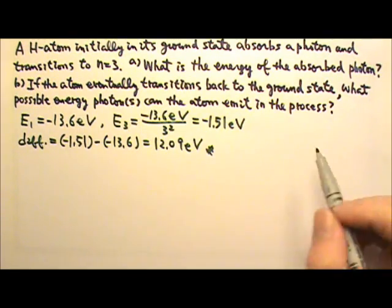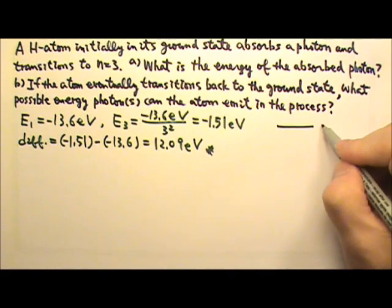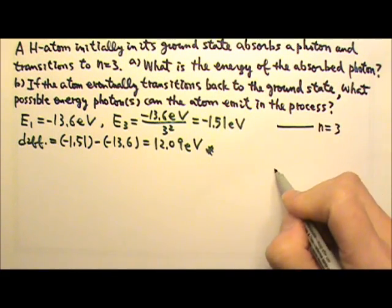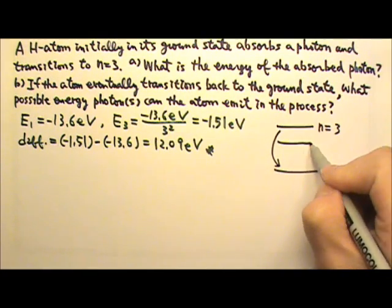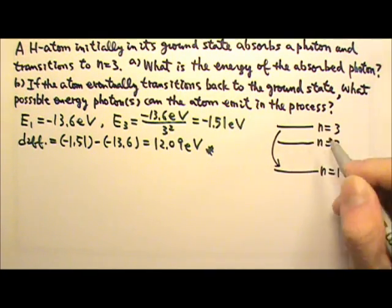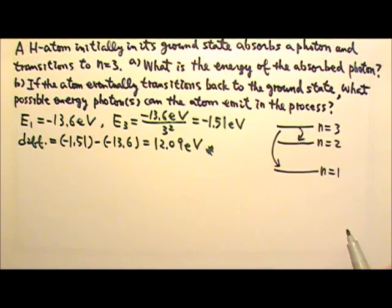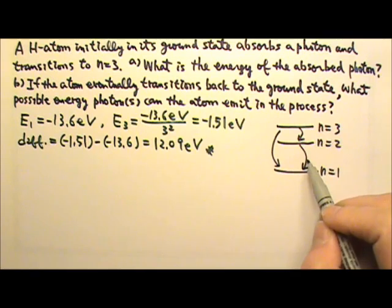And then for part b, the transition going from n equals 3 to n equals 1 can go straight down or it can go through n equals 2. So it can first transition down to 2 and then to 1. So there are 3 possible energy photons.